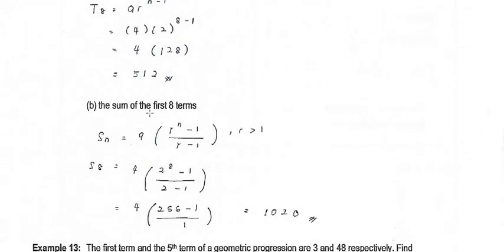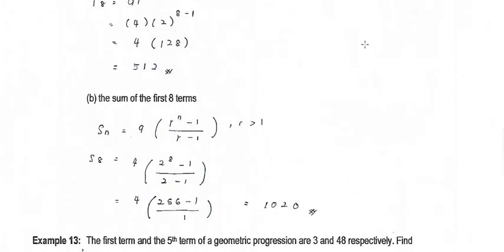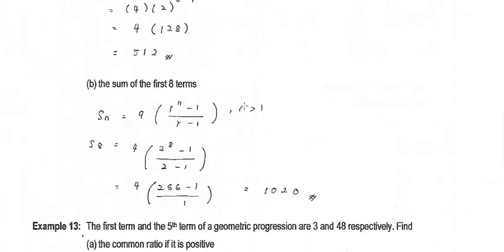Next, we want to find the sum of the first 8 terms, S8. Since R equals 2 is larger than 1, we apply the formula Sn equals A times (R to the power N minus 1) over (R minus 1). Substituting A, R, and N, we get the sum of the first 8 terms equal to 1,020.